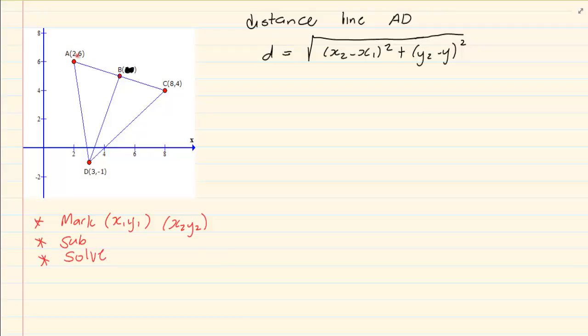Now if I want the distance of AD then I am going to mark my x1 y1, my x2 y2. Now remember it doesn't matter which one is x1 and which one is x2. What does matter is that you will not mix your 1's and 2's. So when you have x1 then you must have y1. You can't have x1 and y2.